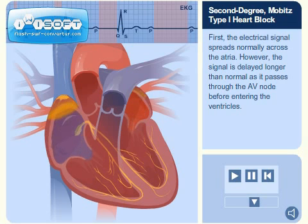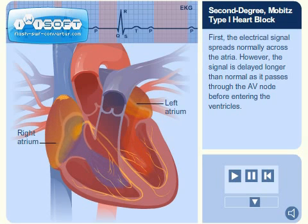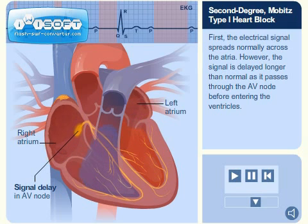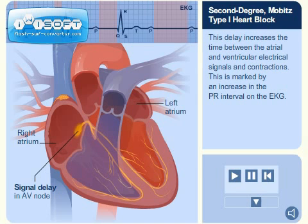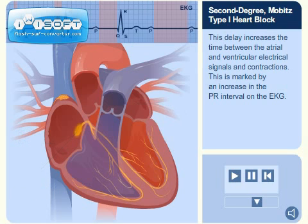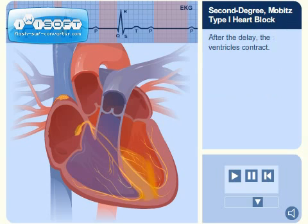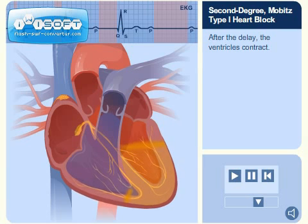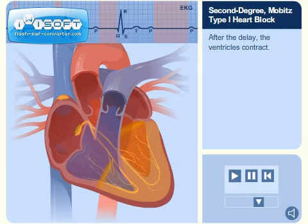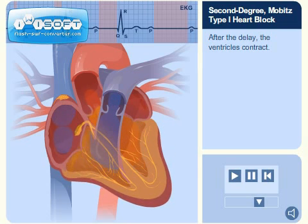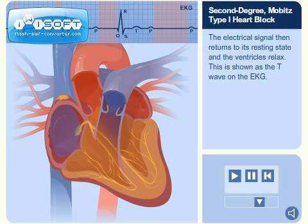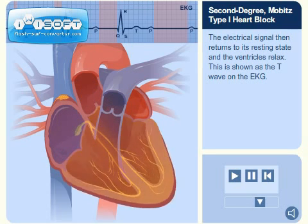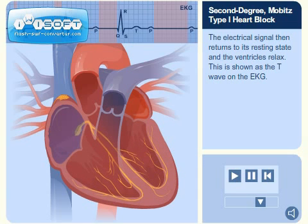First, the electrical signal spreads normally across the atria. However, the signal is delayed longer than normal as it passes through the AV node before entering the ventricles. This delay increases the time between the atrial and ventricular electrical signals and contractions. This is marked by an increase in the PR interval on the EKG. After the delay, the ventricles contract. The electrical signal then returns to its resting state and the ventricles relax, shown as the T wave on the EKG.